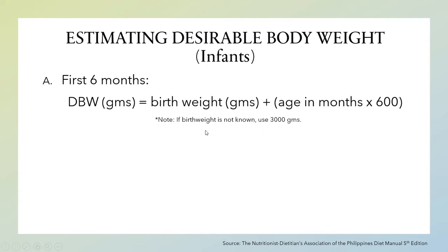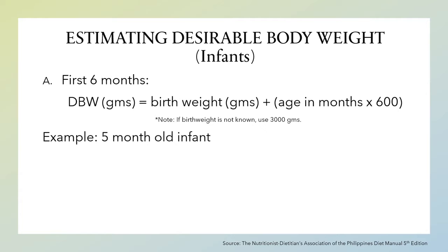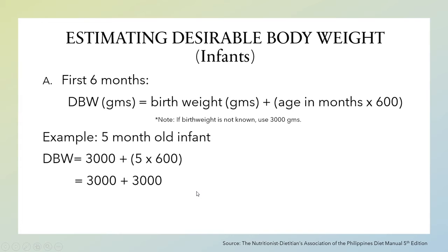Take note that if the birth weight of the child is unknown, use 3000 grams. For example, a five-month-old infant: the desirable body weight is 3000 plus 5 times 600. Five times 600 is 3000, so 3000 plus 3000 equals 6000 grams.